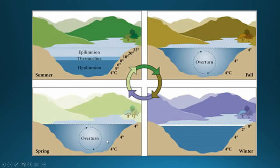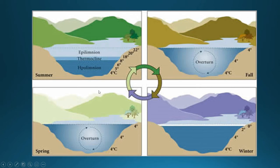In springtime, the ice starts absorbing solar energy, begins to melt and warm up, and as it warms to 4°C it becomes more dense and sinks — overturning the water column, mixing nutrients into the surface layer. As the water continues to warm through late spring into early summer, you arrive back at the stratified water column situation. This is typical for lakes found in temperate regions — two overturns per year — which we call dimictic.